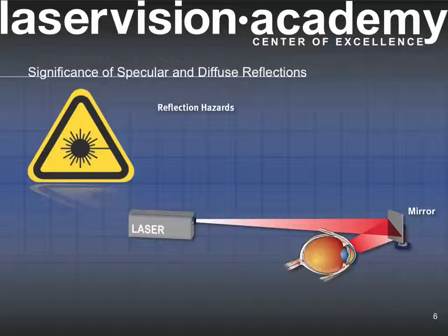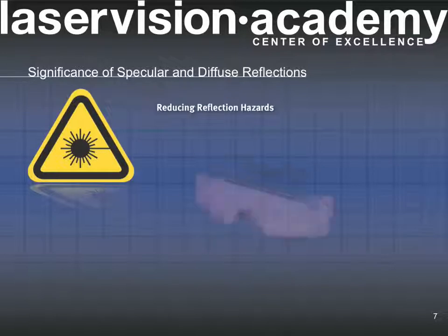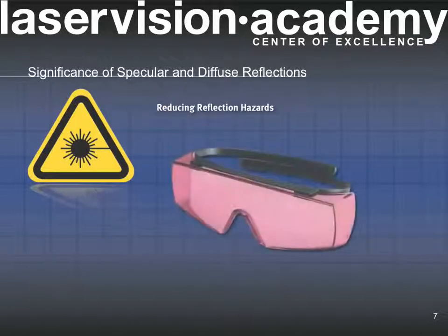These would be levels greater than the maximum permissible exposure, also known as the MPE. The goal when working with laser light is to recognize the potential for reflective hazards and implement proactive control measures to minimize their potential for causing injury.